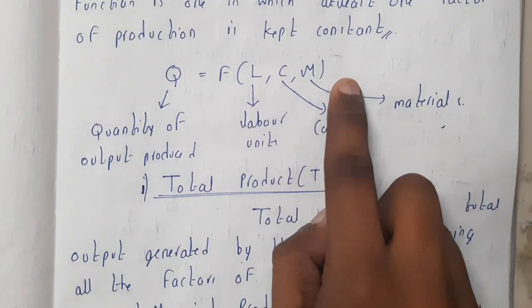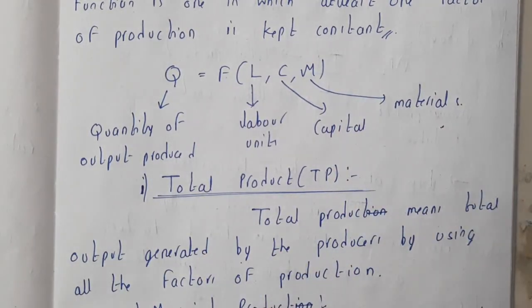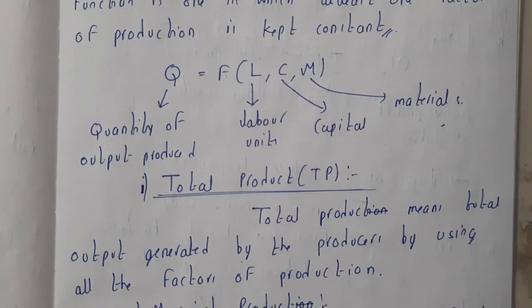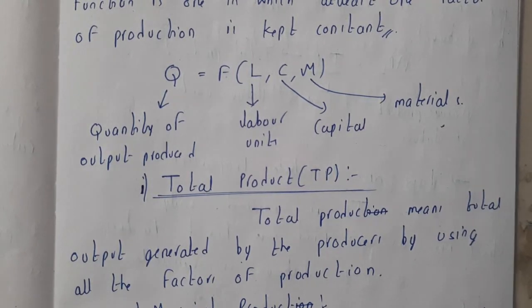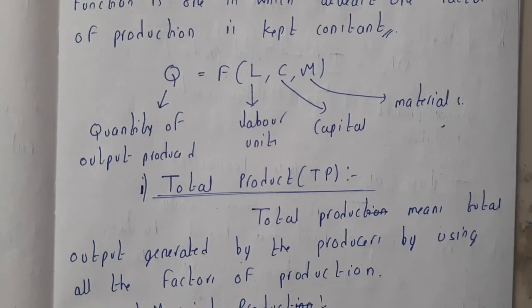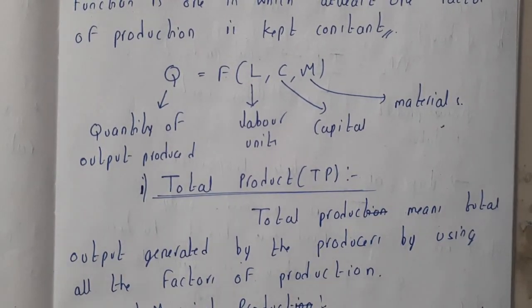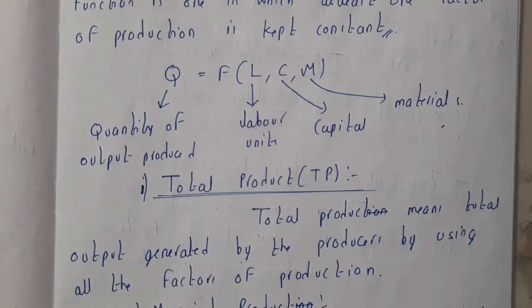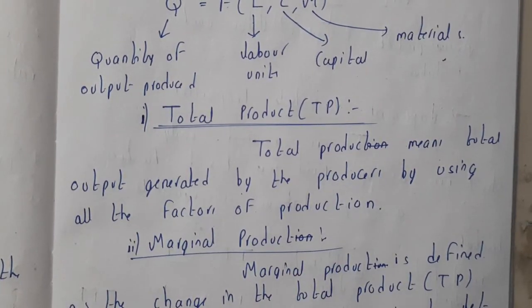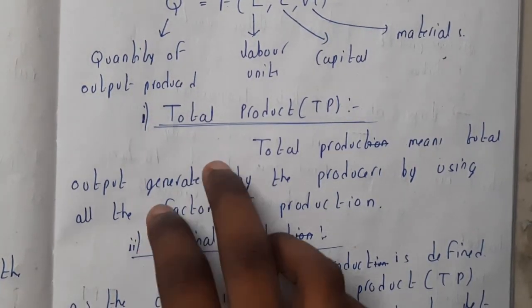In most situations, capital is kept constant. Capital includes assets like buildings — those are obviously kept constant because you don't increase your area day to day. Only if you're getting huge profits will you expand your business. That is why those factors are kept constant in the short run.